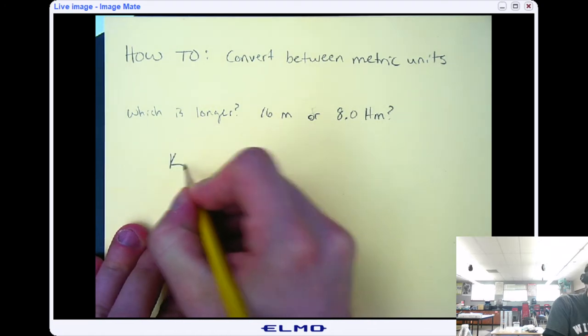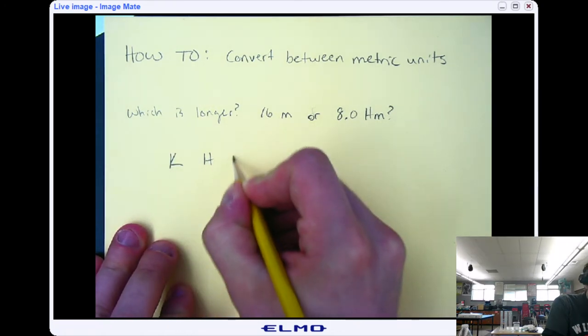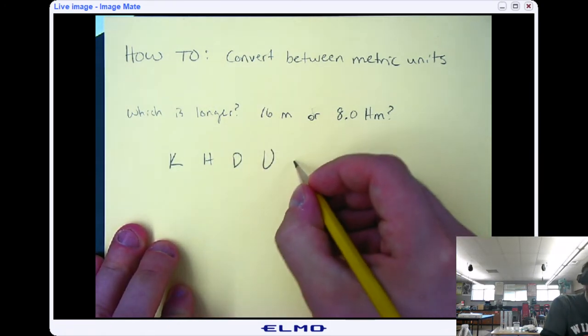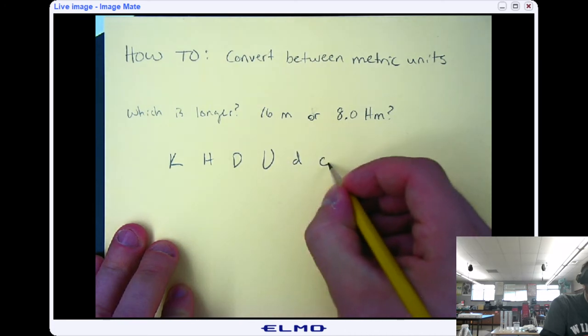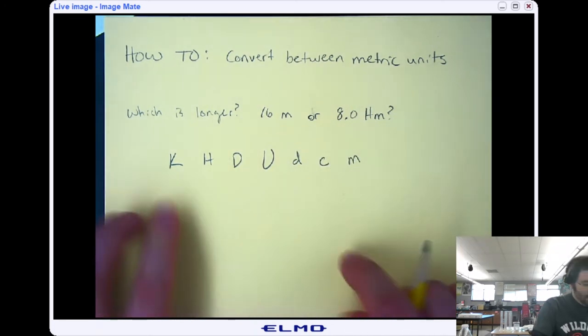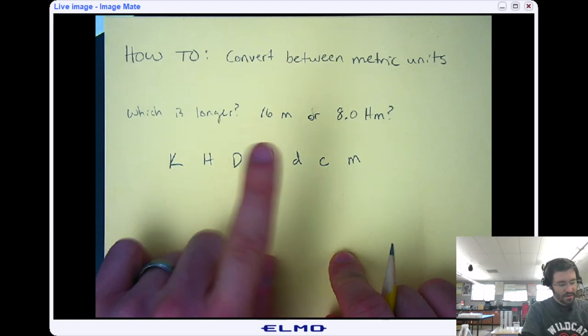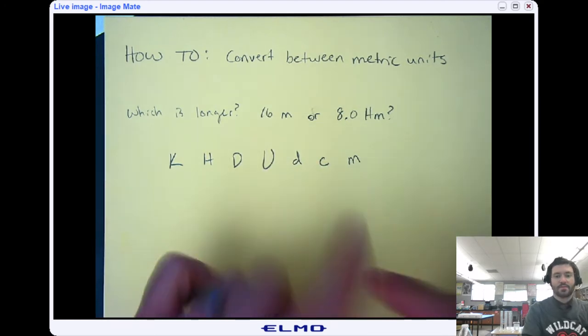And the letters that go with that are K, H, D, base unit, lowercase d for deci, lowercase c for centi, and lowercase m for milli. So kilo, hecto, deca, base unit, deci, centi, milli. So now they're in order.